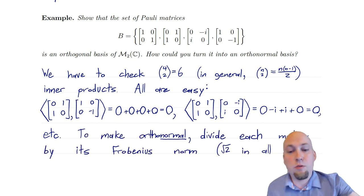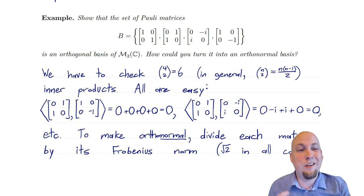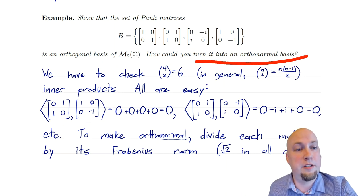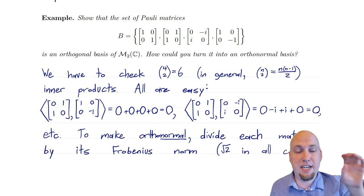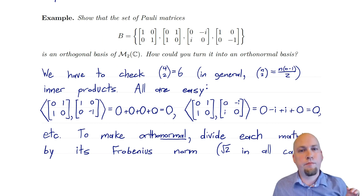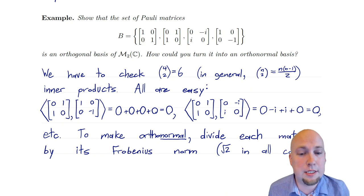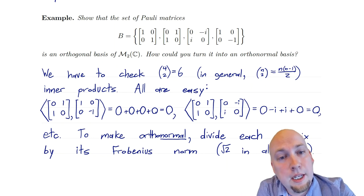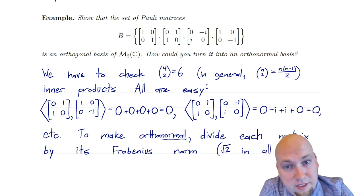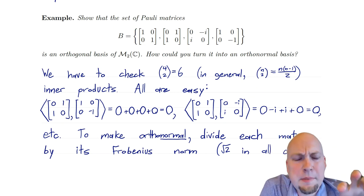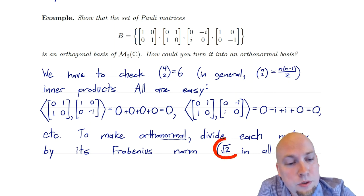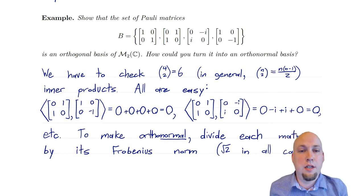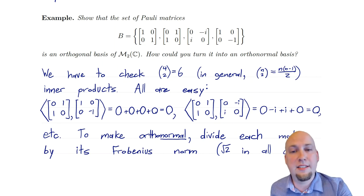Now that we've checked orthogonality, we know it's an orthogonal basis of the space of two by two complex matrices. To make it an orthonormal basis, just take every matrix in that set and divide it by its norm — the norm induced by the Frobenius inner product. It turns out each of these matrices has Frobenius norm root 2, because you square each of the entries, add them up (getting 1 + 0 + 0 + 1 = 2), and then take the square root to get root 2. Similarly all other matrices have Frobenius norm root 2. So if you stick a 1 over root 2 in front of each of them, you get an orthonormal basis of M_2(C).